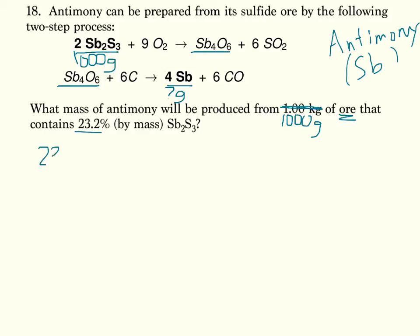If you want to see that in math, that's 23.2 out of 100 is how much out of 1,000? If we had 1,000-gram rock, that's 232 grams of Sb2S3. From there, I'm going to grams to moles, moles to moles, moles to grams, except I'm just going to add in one more mole to mole step.